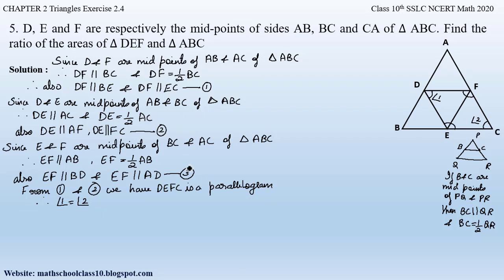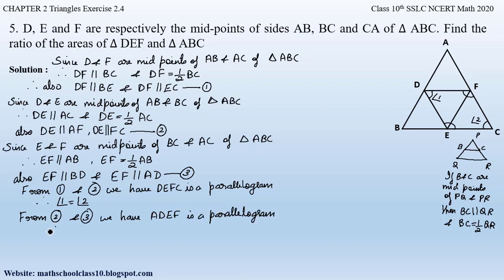From equations two and three, DE is parallel to AF and EF is parallel to AD. So ADEF forms another parallelogram. From equations two and three, ADEF is a parallelogram. Therefore, the opposite angles are equal: angle A equals angle E in parallelogram ADEF. Naming these as angle 3 and angle 4, we write angle 3 equals angle 4.